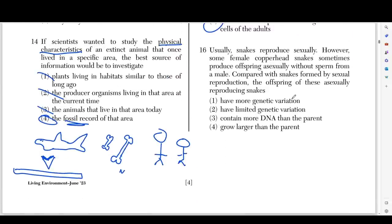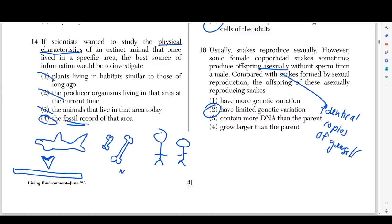Number sixteen says usually snakes reproduce sexually. However, some female copperhead snakes sometimes produce offspring asexually without sperm from a male. Compared with snakes formed by sexual reproduction, the offspring of these asexually reproduced snakes have what? Obviously they're going to have limited genetic variation. If you're reproducing asexually, you're making identical copies of yourself — identical. If I asexually reproduce, I'm going to have the exact same genetic information expressed in the exact same way. Contain more DNA — doesn't make sense. Grow larger — doesn't make sense. Have more genetic variation — none of these make sense, because asexual reproduction produces genetically identical offspring.